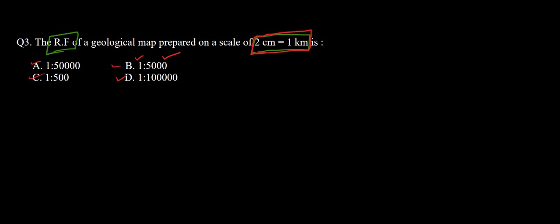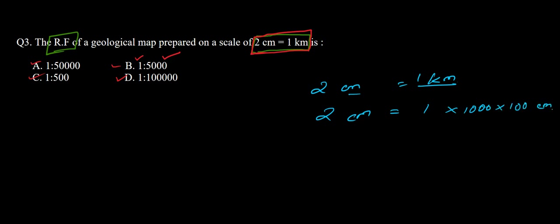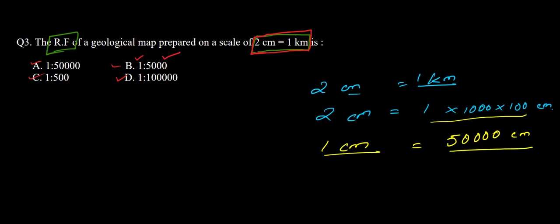We convert everything to centimeters, the smallest unit. 2 centimeters equals 1 kilometer, which equals 1 × 1000 meters × 100 centimeters, giving us 1 lakh (100,000) centimeters. Dividing both sides by 2, we get 1 centimeter equal to 50,000 centimeters. So 1 centimeter on the map represents 50,000 centimeters on the actual ground.